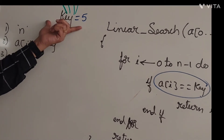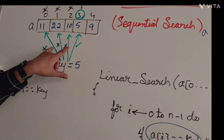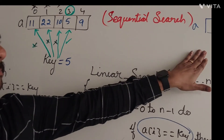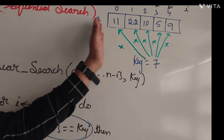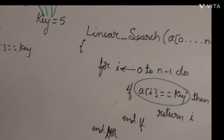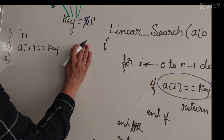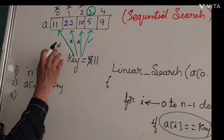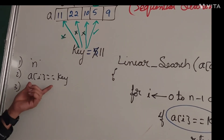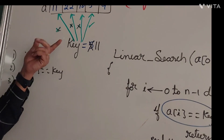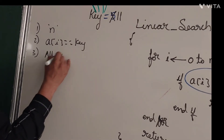The number of times the basic operation executes depends not only on the problem size but also on how we give the input. If the key is found at the fourth comparison, we do four comparisons. If not found at all, we check all elements. If the key matches the very first element, only one comparison is needed. So we need to find all three cases: best, worst, and average.